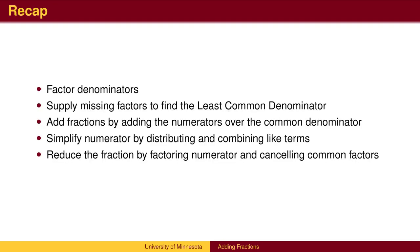To recap, the process is to first factor each denominator. Next, supply the missing factors. Fractions are then added by adding the numerators over a common denominator. The numerator can be expanded and like terms combined, which may lead to additional factoring. At this point, common factors may cancel.